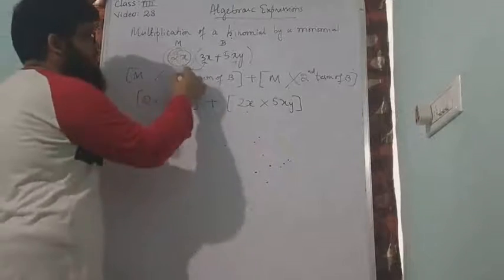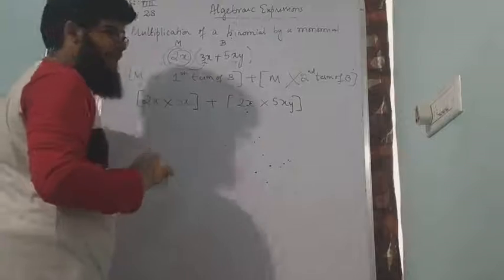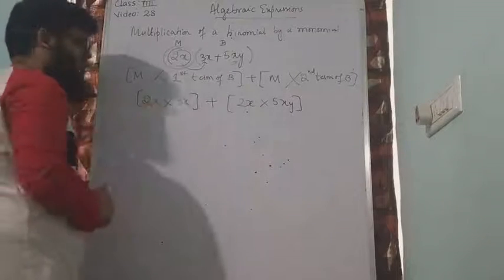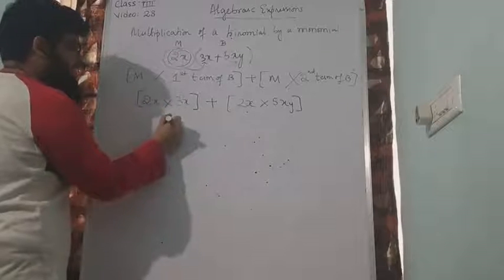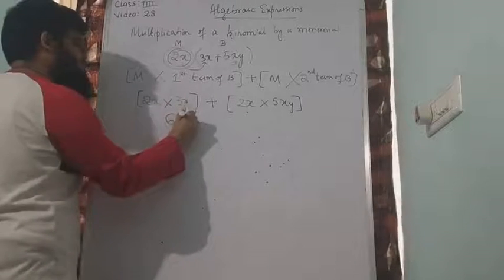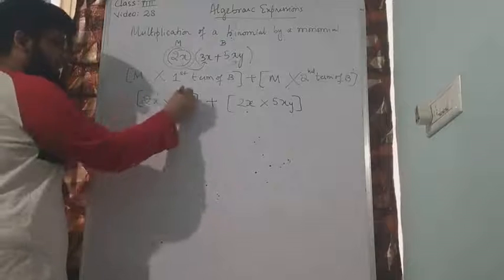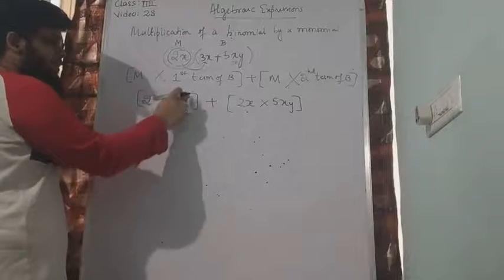I have two circles. I have put arrows for you to understand. And I have also written some general form to understand. Now let us do the multiplication. 2 times 3 is 6. x into x will be x square. We can add the powers by writing it, 1 plus 1 will be 2.